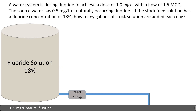In the raw water pipe, we already have 0.5 milligrams per liter of natural fluoride, and our goal is one milligram per liter. The difference between one and 0.5 — which we already have — is how much we're going to feed. So our dose is going to be 0.5 milligrams per liter. There's already half a milligram per liter in the water; if we want one milligram per liter, we need to add 0.5 more.